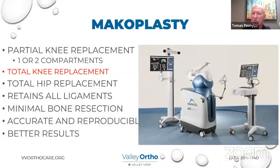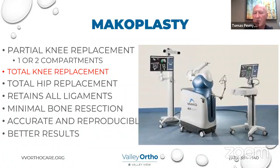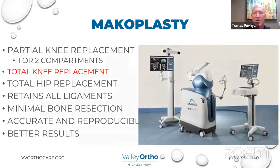I like to do these surgeries robotically — what we call the Mako plasty. We've been doing this since 2010 and were one of the first hospitals between Denver and Salt Lake City to use the robot. We do preoperative CT scans, allowing us to see the bone in three dimensions and place the components exactly where we want them — even before cutting the skin. With the robot we can do hip replacements, partial replacements, and now in the last six to seven years, total knee replacements.